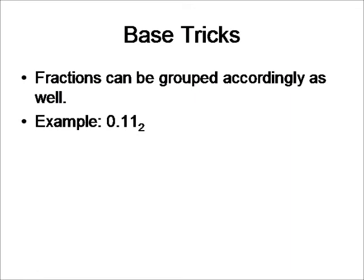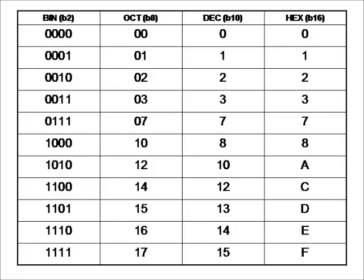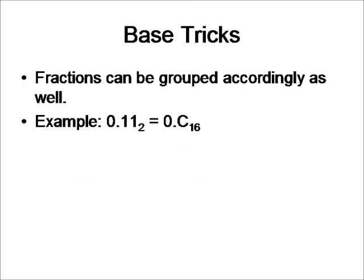Let's take this example: 0.11. We are going to pad this up with two zeros since we need to convert this to hexadecimal. Then we are going to look it up in our table. We know that 1100, according to this table, is C, and that leaves us with 0.C base sixteen.